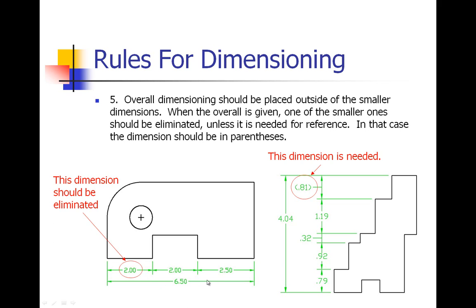So if we took out this two inches we could just take 6.50 and subtract 2.50 and 2 to get the last measurement. Now that is unless it is needed for a reference, and in that case it should be put in brackets over here. So we have an overall dimension of 4.04, and because there are so many little stair steps here it would take a significant amount of time to calculate this, so it is faster to just put that last little dimension in there and put that in some brackets, and that will help the machinist or that will help whoever is manufacturing this part.